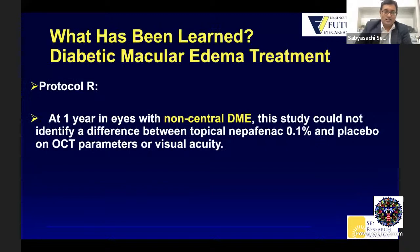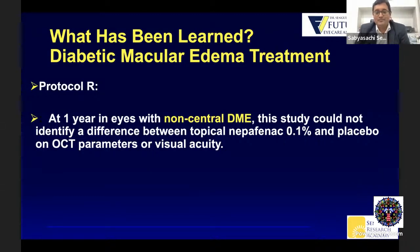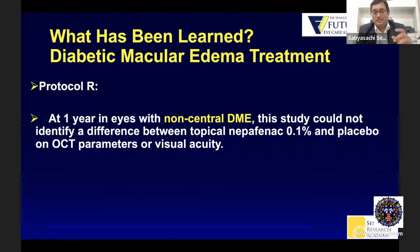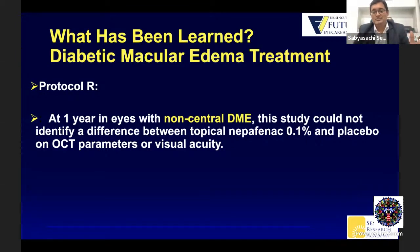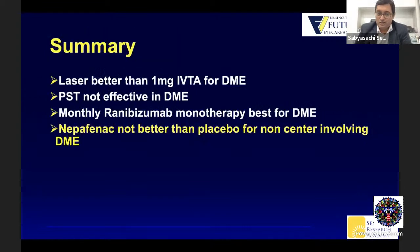Then Protocol R said that at one year in eyes with non-center-involving DME, there was no identifiable difference between topical Nepafenac 0.1% and placebo on OCT parameters or visual acuity. So when there is non-center-involving DME, vision is generally very good, and people were using topical Nepafenac to treat these. But this clearly showed there was no benefit. The summary: Nepafenac is not better than placebo for non-center-involving DME.